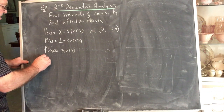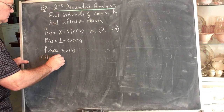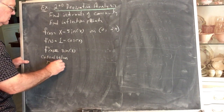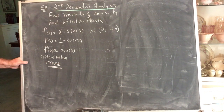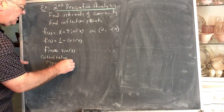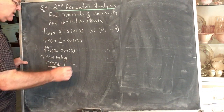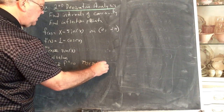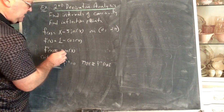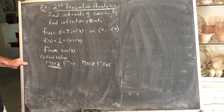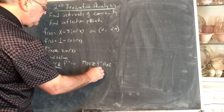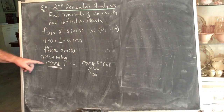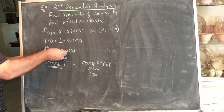The next piece is to find all the critical values. Type 1 is where the second derivative is equal to 0. Type 2 is where the second derivative does not exist. Since this is a sine function, we know there are none of Type 2, but we will have a Type 1 critical value — we're going to set this function equal to 0.